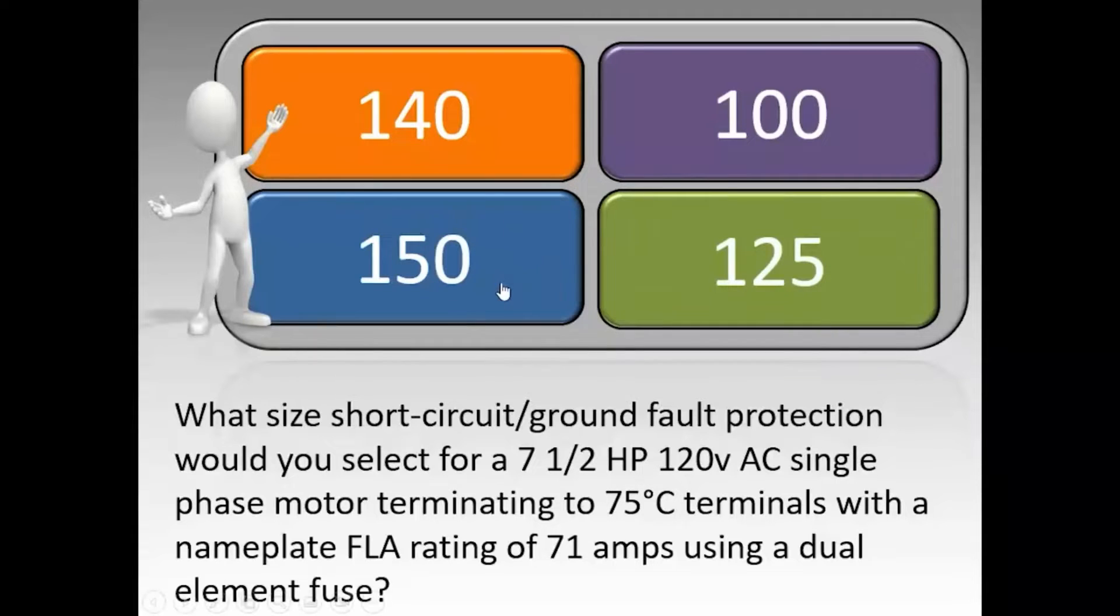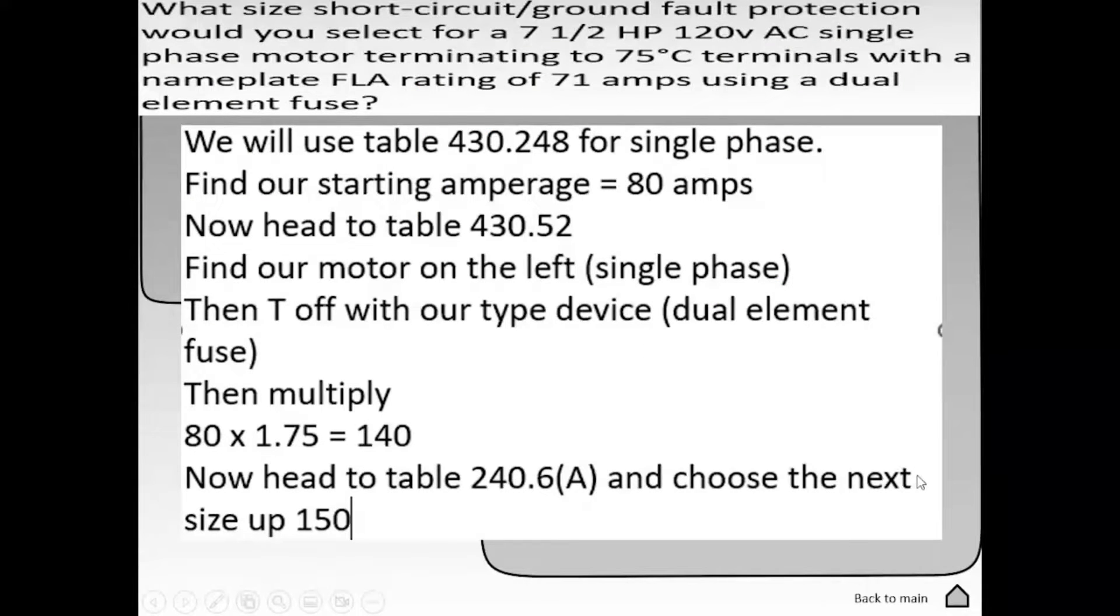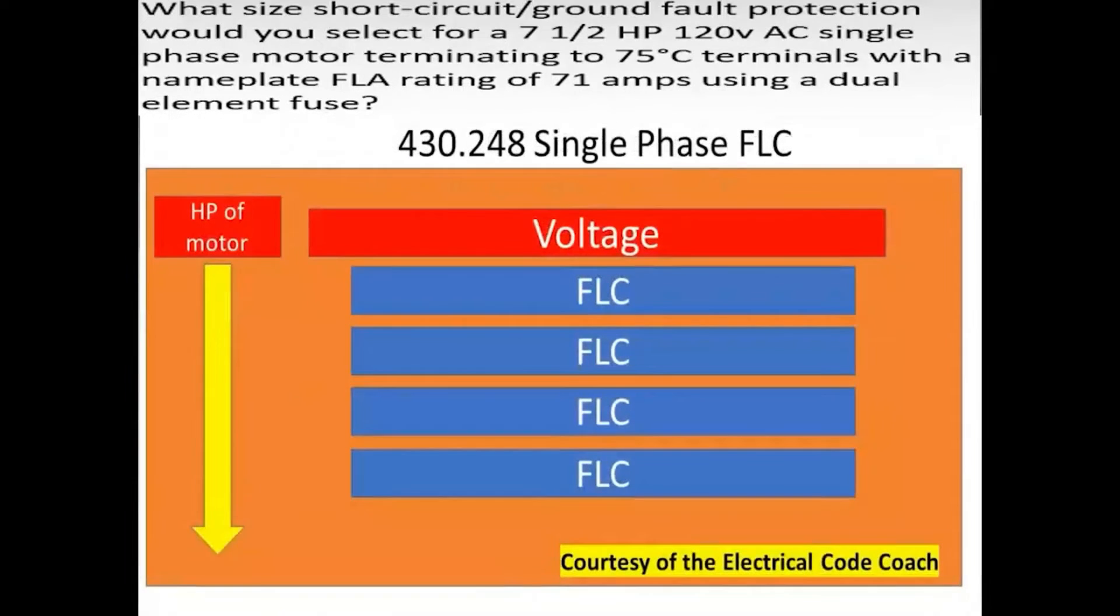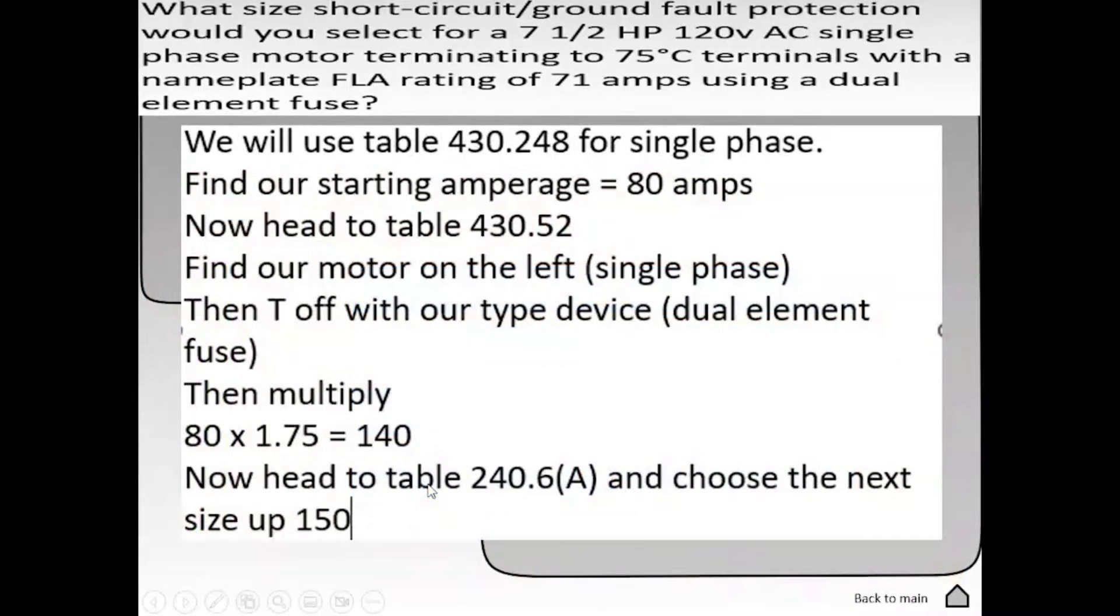The correct answer is 150. For this one we're going to be using table 430.248 for single phase and we're going to find our FLC. We start on the left hand side and find our horsepower, then come down and tee off with our respective voltage and we will find our FLC which in this case is 80 amps.